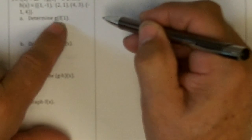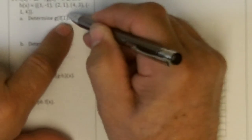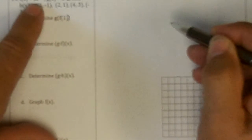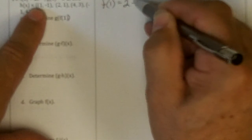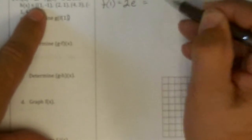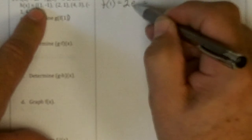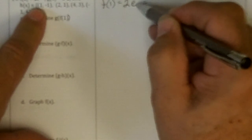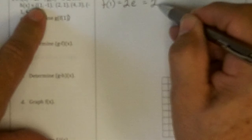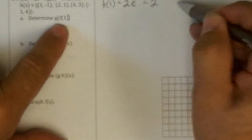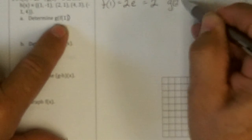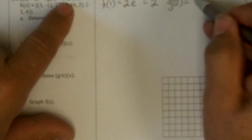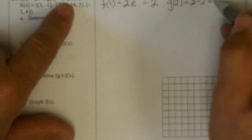Problem 14: If f of x equals this, determine g of f of 1. I'm missing a parenthesis there. So f of 1 is 2 e to the 1 minus 1, which is e to the 0, or 1 times 2 is 2. So then I got to put that into g, and g of 2 is 2 minus 2, which is 0.